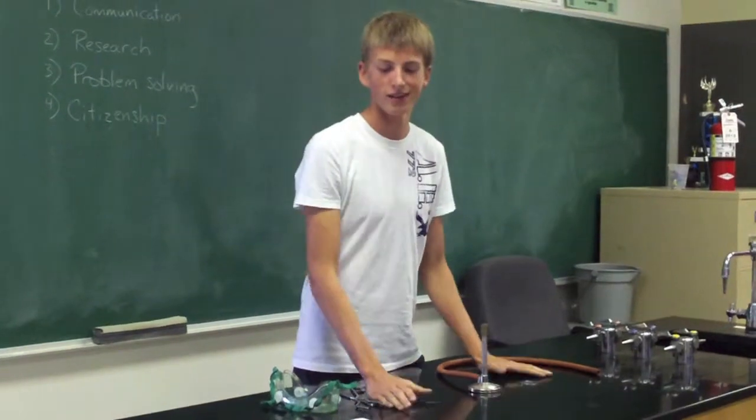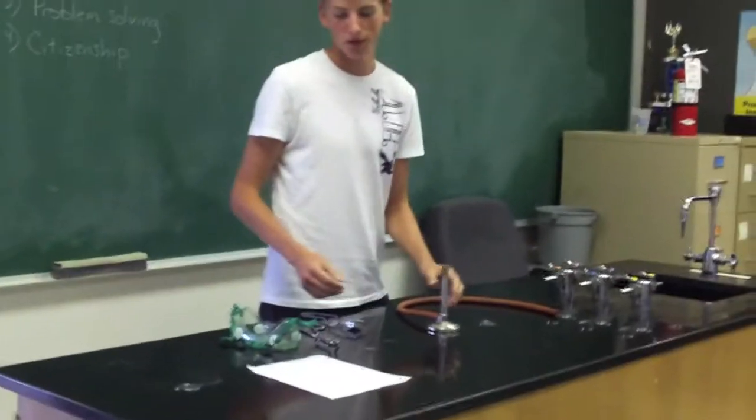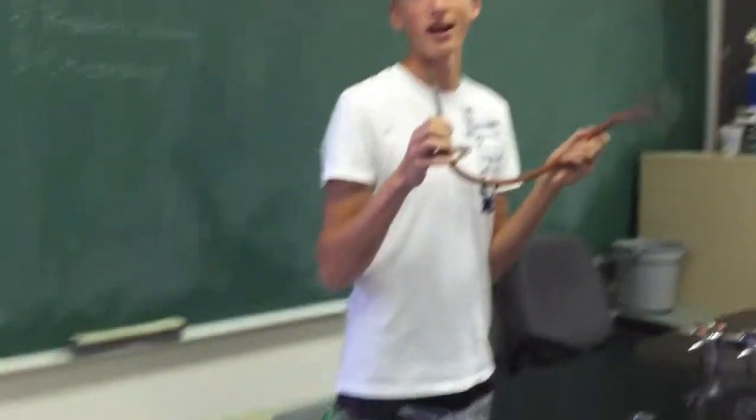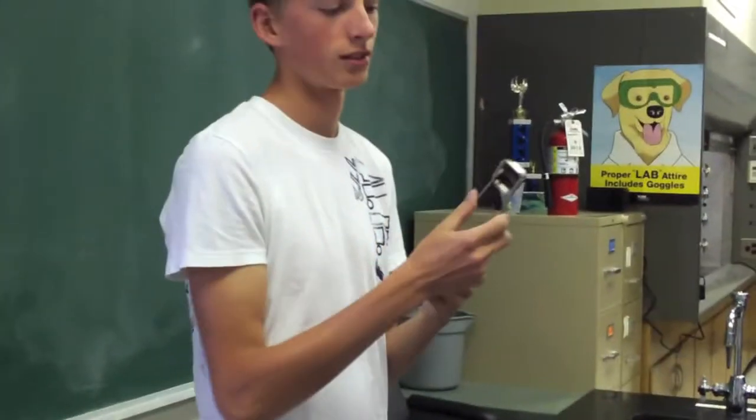All right, so today we're going to learn how to properly use the Bunsen burner. Let's go over materials first. We have the Bunsen burner itself, then we have a striker. It makes sparks and ignites the gas. We have goggles for safety, and at the end we're going to use forceps and some magnesium strips.